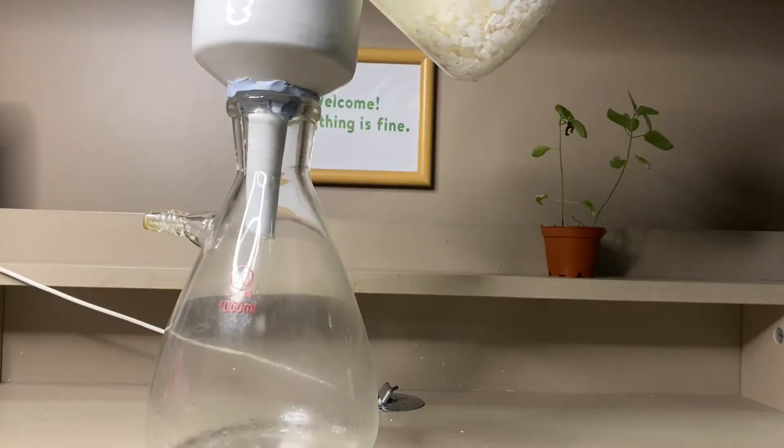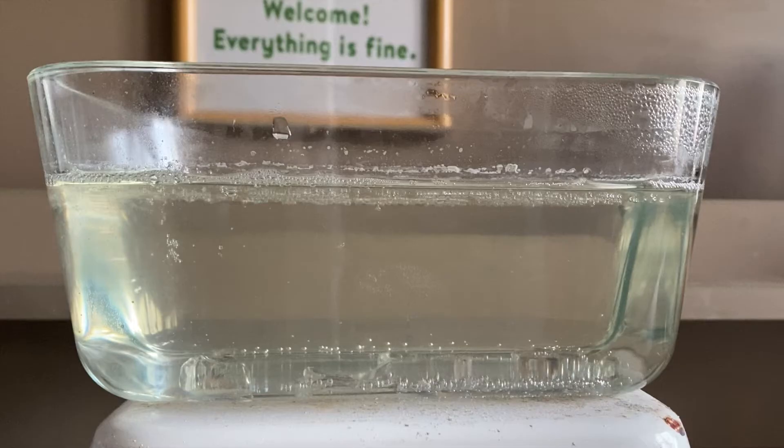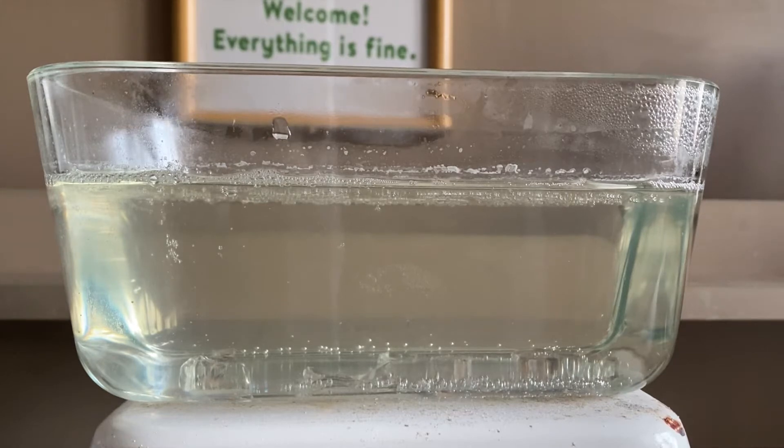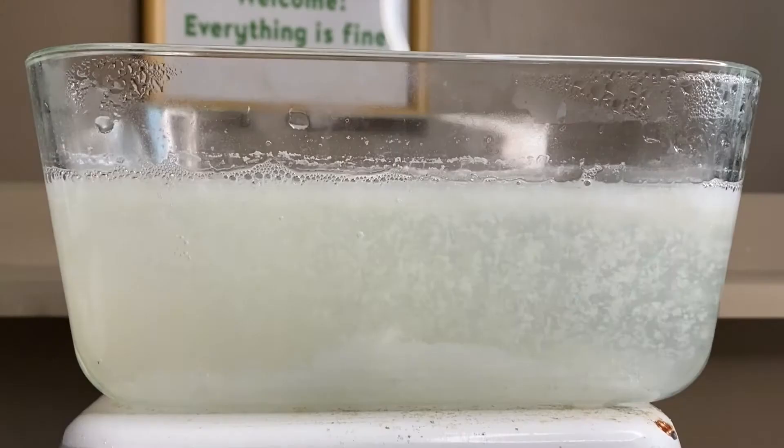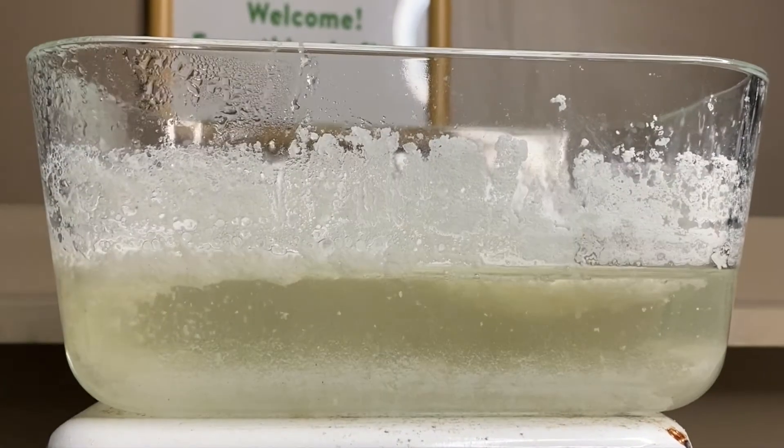After some time, we filtered the unreacted eggshells and obtained a clear solution of calcium acetate. We proceeded to boil it down in order to obtain calcium acetate solid.